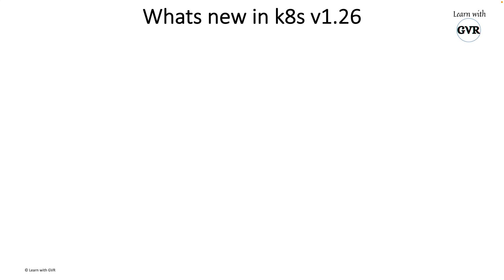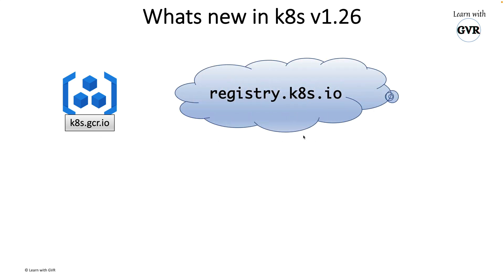Before 1.24, the actual registry was k8s.gcr.io, which is Google Cloud-based Google Container Registry. From Kubernetes 1.25 onwards, the new registry.k8s.io is being used. Before 1.25, control plane images were deployed in both Google Container Registry and the new registry to maintain both. From 1.26 onwards, only new tags will be deployed into the new registry, and the old registry is no longer used.